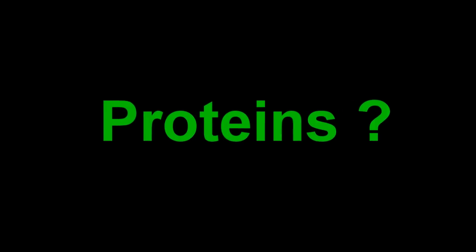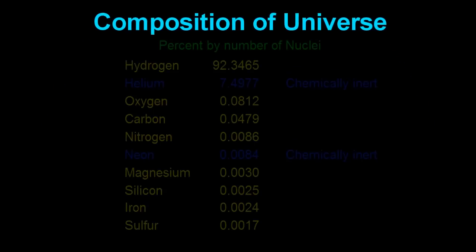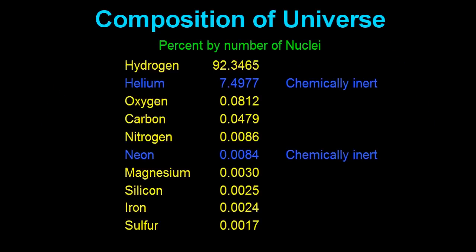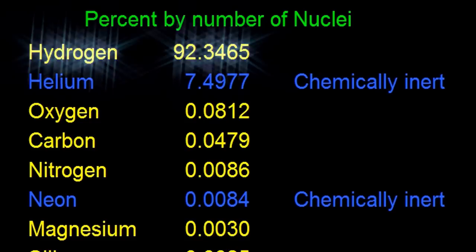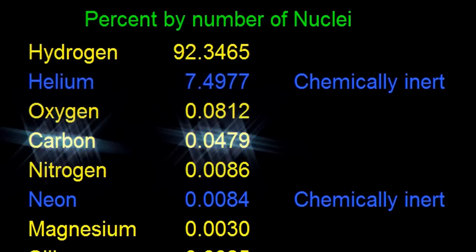So what the hell's a protein? Well proteins are polymers of amino acids. So what's an amino acid? Well amino acids are made up of the four most common chemically reactive species in the universe: that's hydrogen, oxygen, carbon and nitrogen.